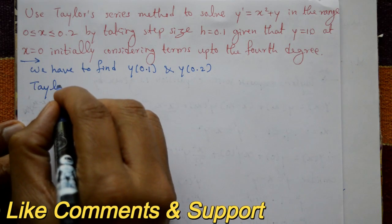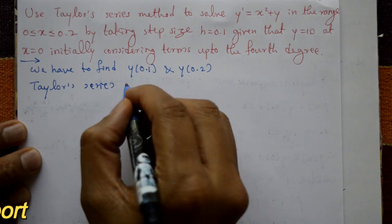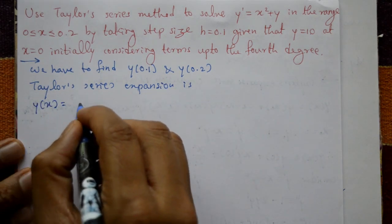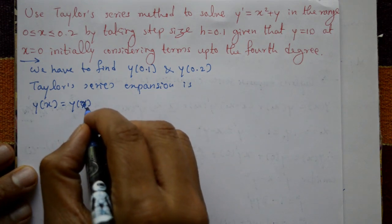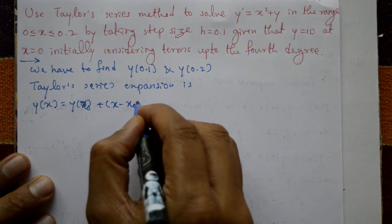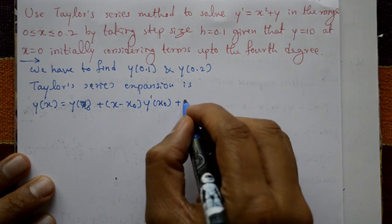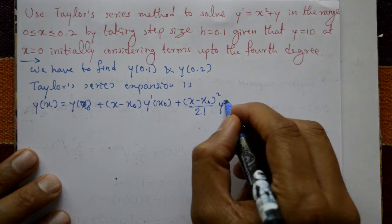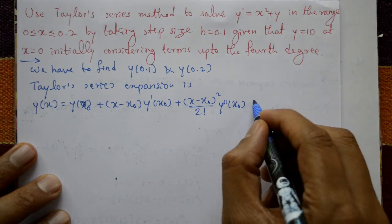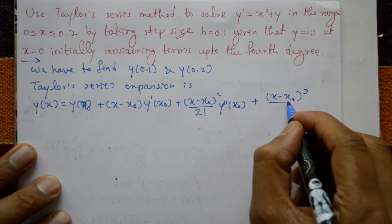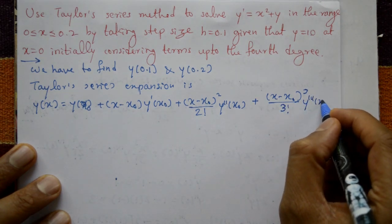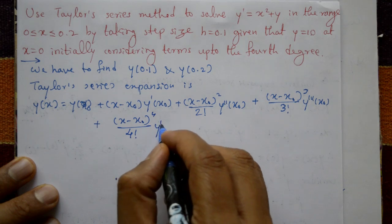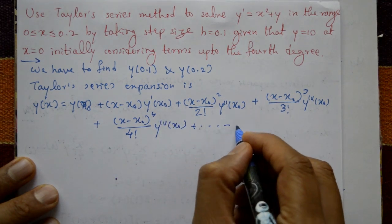The Taylor series expansion is given by: y(x) = y(x₀) + (x − x₀)y'(x₀) + (x − x₀)²/2! · y''(x₀) + (x − x₀)³/3! · y'''(x₀) + (x − x₀)⁴/4! · y''''(x₀) + ... up to the 4th degree.